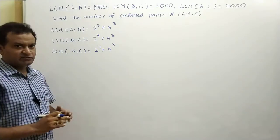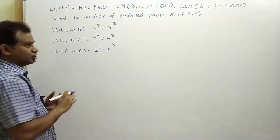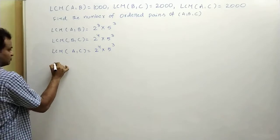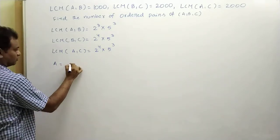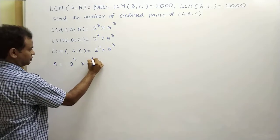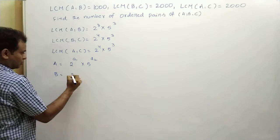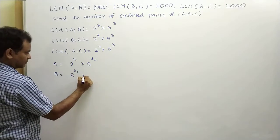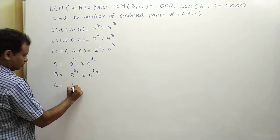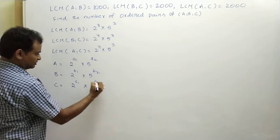Now we have written the LCMs in prime factorization format. Let us also assume a, b, c in their prime factorization format. We assume a = 2^a1 × 5^a2, similarly b = 2^b1 × 5^b2, and c = 2^c1 × 5^c2.